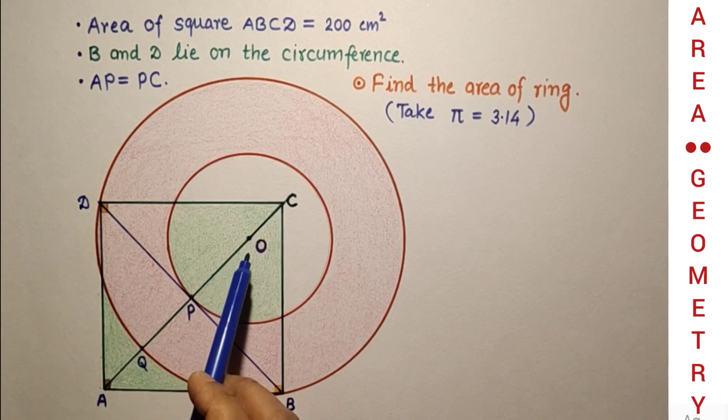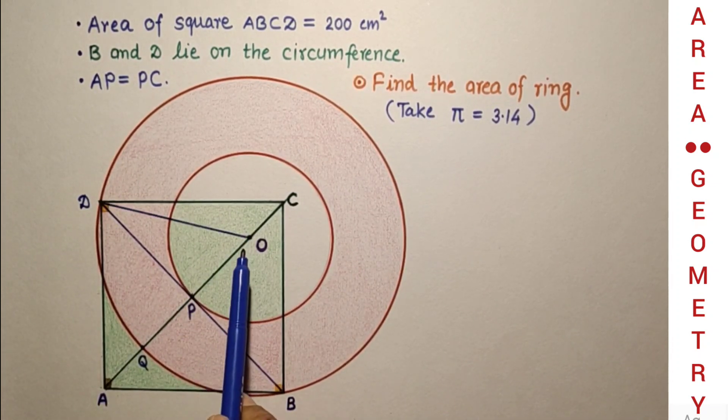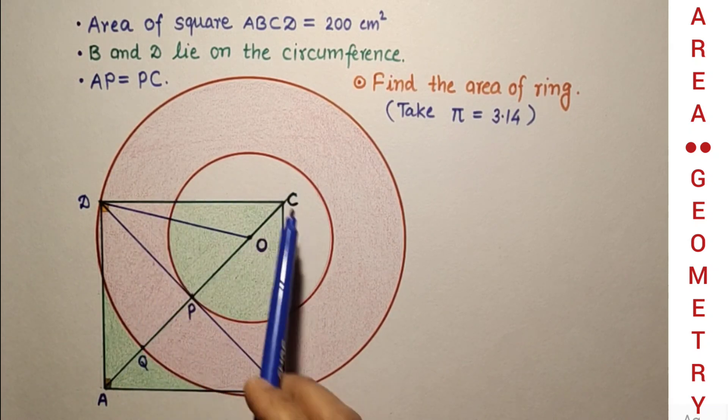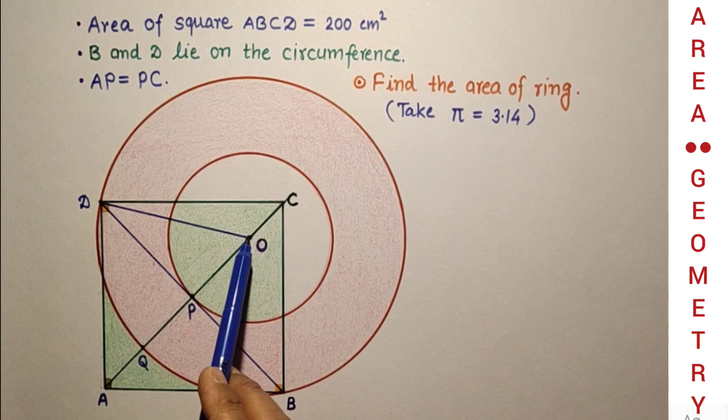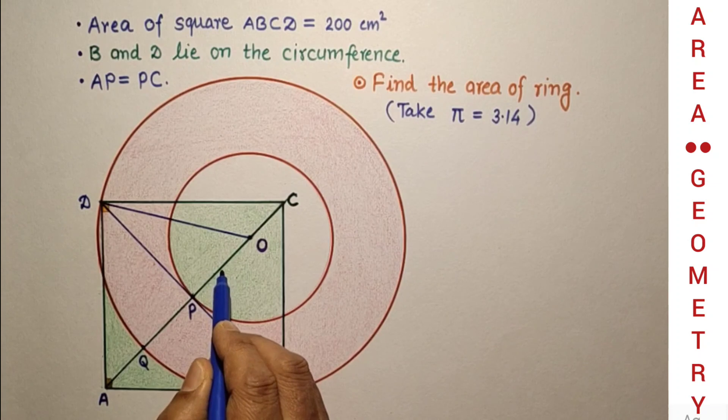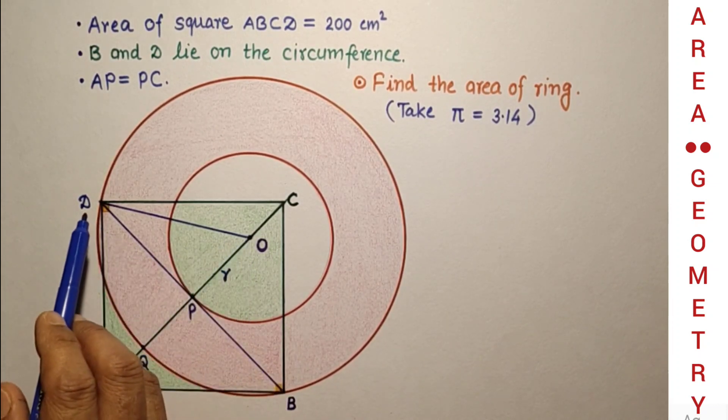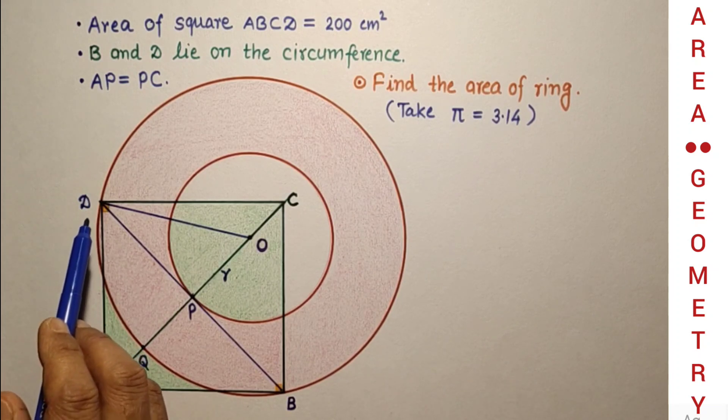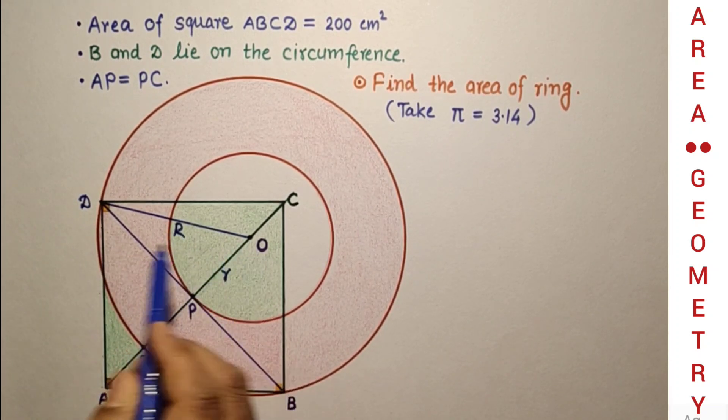Now if we join OD, this is the center for both circles, the smaller circle and the bigger circle. From O to the circumference point P, this is the smaller radius r. From the center O, if D is the point on the bigger circle's circumference, this will be the bigger radius R.